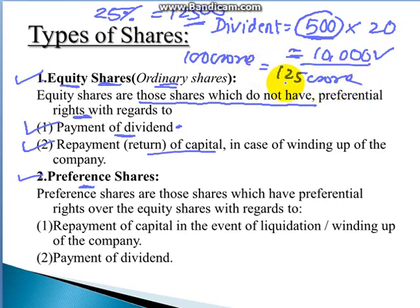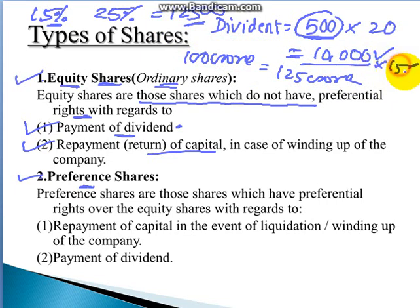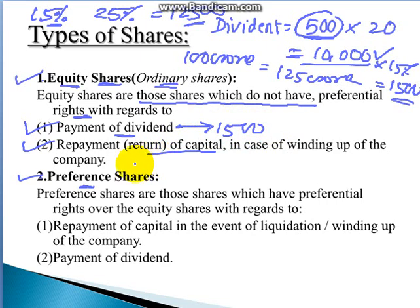The company's managing body then decides how much dividend to pay per share. Say they decide to give 15% dividend this year. On my investment of 10,000 rupees, I calculate 10,000 × 15% and receive 1,500 rupees as dividend. This is the payment of dividend that equity shareholders receive.